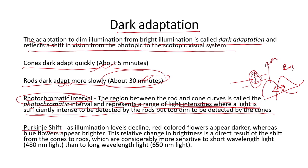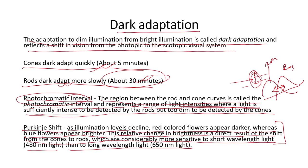There is something called the Purkinje shift, a phenomenon quite often observed. As illumination levels decline, red-colored flowers appear darker whereas blue flowers appear brighter. This relative change in brightness is a direct result of the shift from cones to rods. When shifting from cones to rods, reds become more dark and blues become brighter. This shift is called the Purkinje effect — rods are considerably more sensitive to short wavelengths of light around 400 nanometers than to long wavelengths.